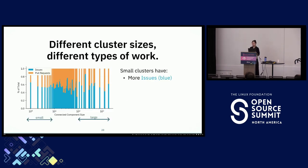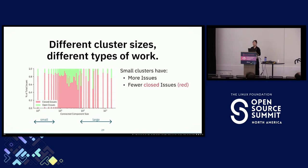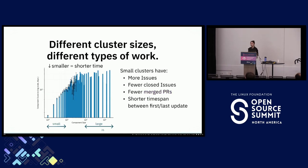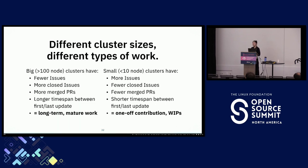This power law distribution can help predict growth in certain areas of an open source project and inform prioritization efforts, because these distributions indicate the presence of several highly connected and impactful nodes. We also hypothesize that different cluster sizes represent different types of work. Smaller clusters with fewer than 10 nodes tended to have more issues with fewer closed, fewer merged PRs, and a shorter time span—meaning the work is currently in progress or is a smaller initiative. Compare this to larger clusters with more than 100 nodes, which tended to have fewer issues, more of which were closed, more merged PRs, and a longer time span, representing long-term, more mature work in projects.